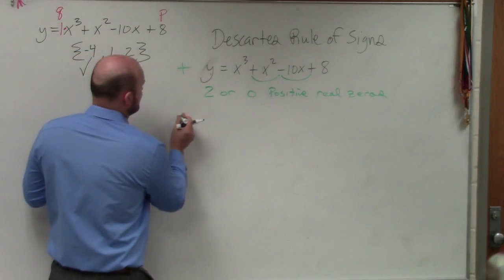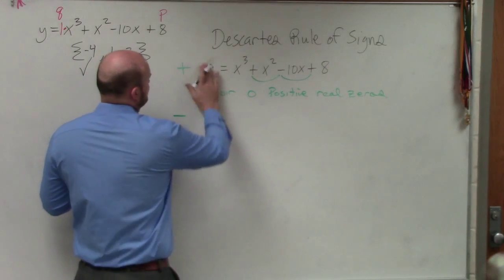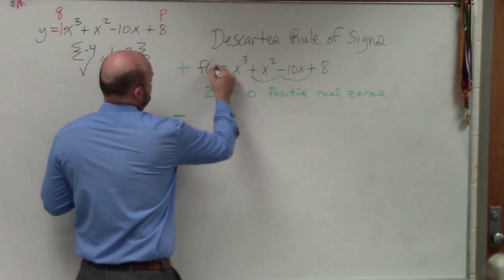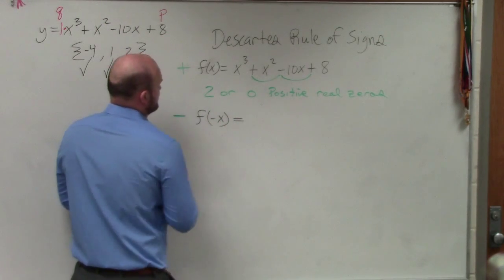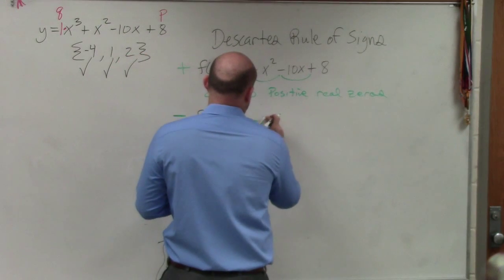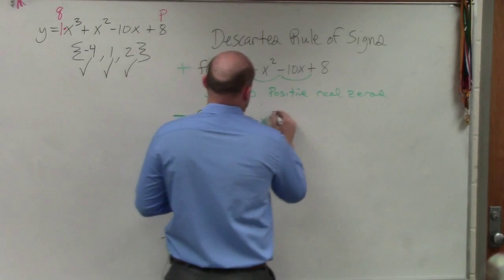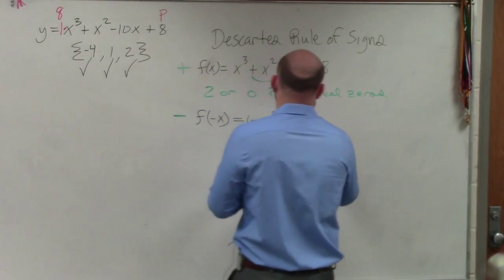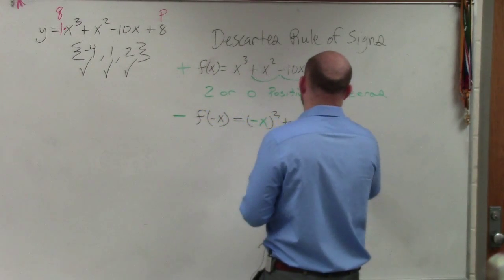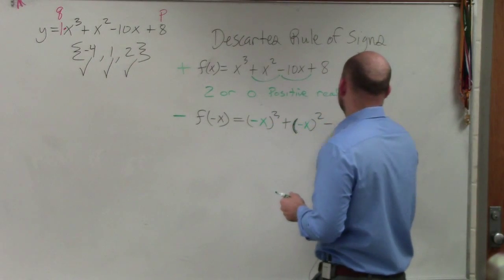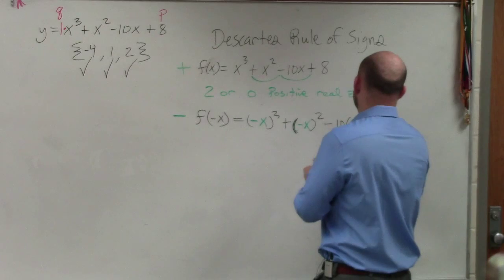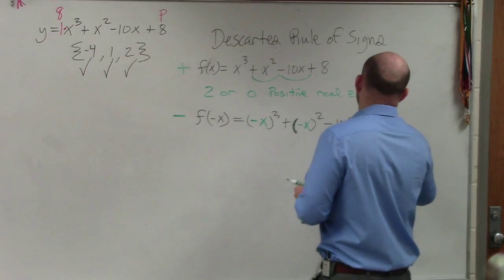Then to find the negative real zeros, I should use f(x). Because what you're going to do is you're going to plug in f(-x). So we do -x³ + (-x)² - 10(-x) + 8.